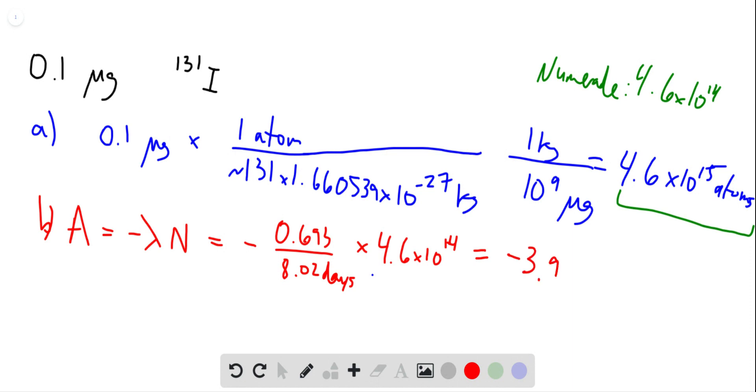Minus 3.97 times 10 to the 13 atoms per day. But we want to get this in atoms per second, so one day is 84,000 seconds, 86,400 seconds.